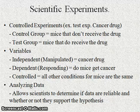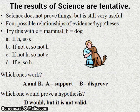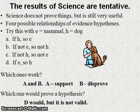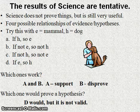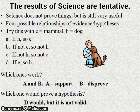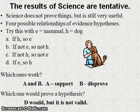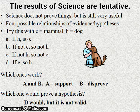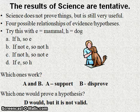We need to investigate the relationships of evidence and hypothesis. Imagine it's Christmas time and there's a large box under the tree with your name on it — you've really been wanting a dog for Christmas. Now, the key statement is: science does not prove things, but it's still very useful. We need to investigate four possible relationships of evidence and hypothesis using this example. Our evidence is that we have a mammal; our hypothesis is that we have a dog.